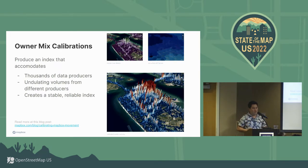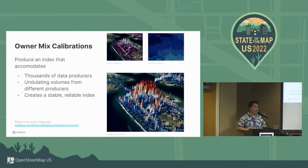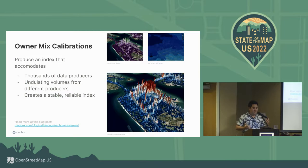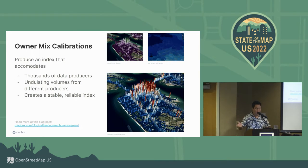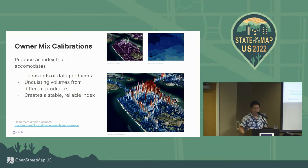The key aspect of this work is what we've done with Movement: we've created something called owner mix calibrations. These enable us to create contiguous activity indexes across time and space. No matter what happens — one application becomes popular, one goes away — that's all normalized. What you ultimately get, for example in San Francisco, is real-time calibrations applied to raw data coming from a variety of owners, creating a smooth and contiguous activity index across regions or the entirety of the United States and other countries.